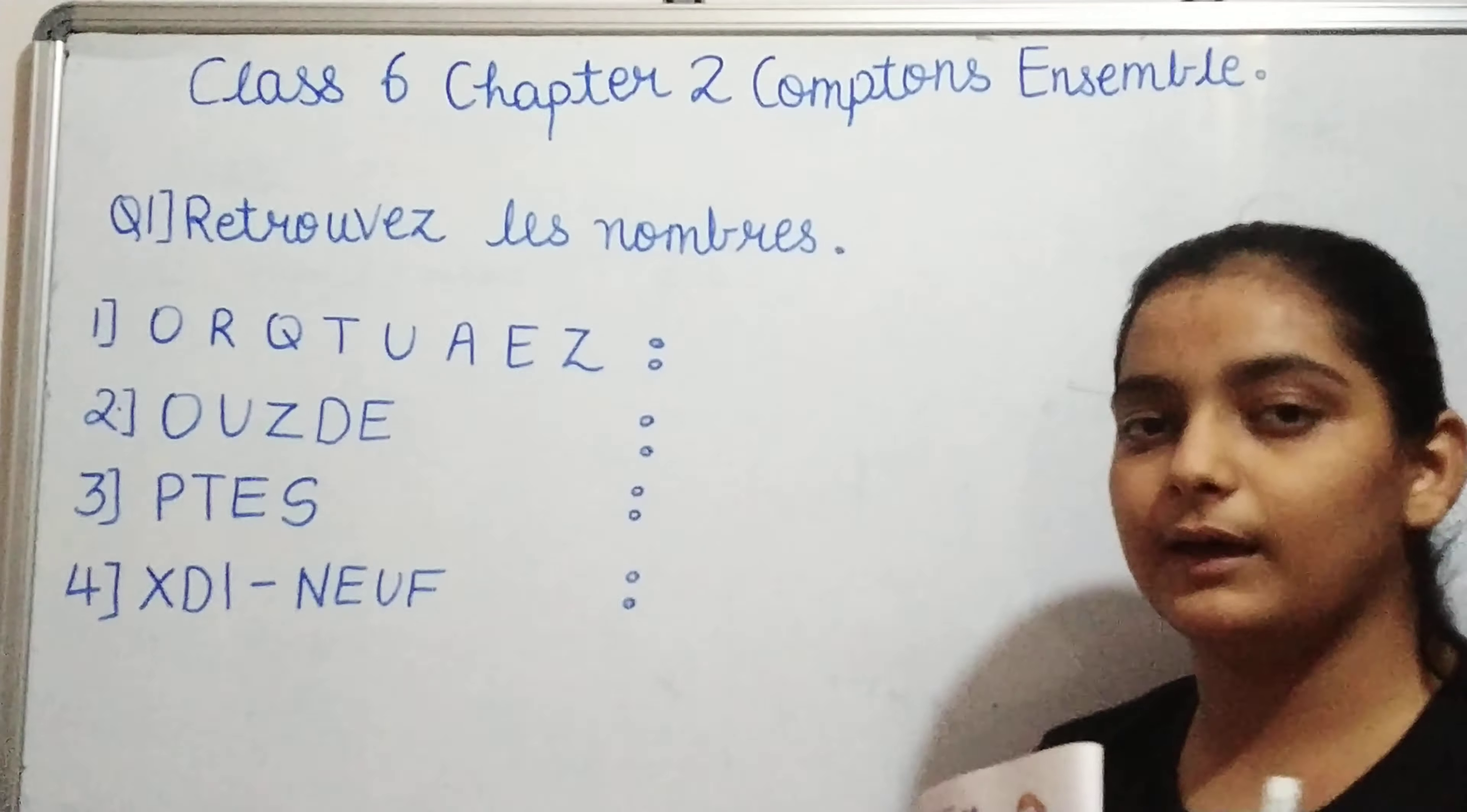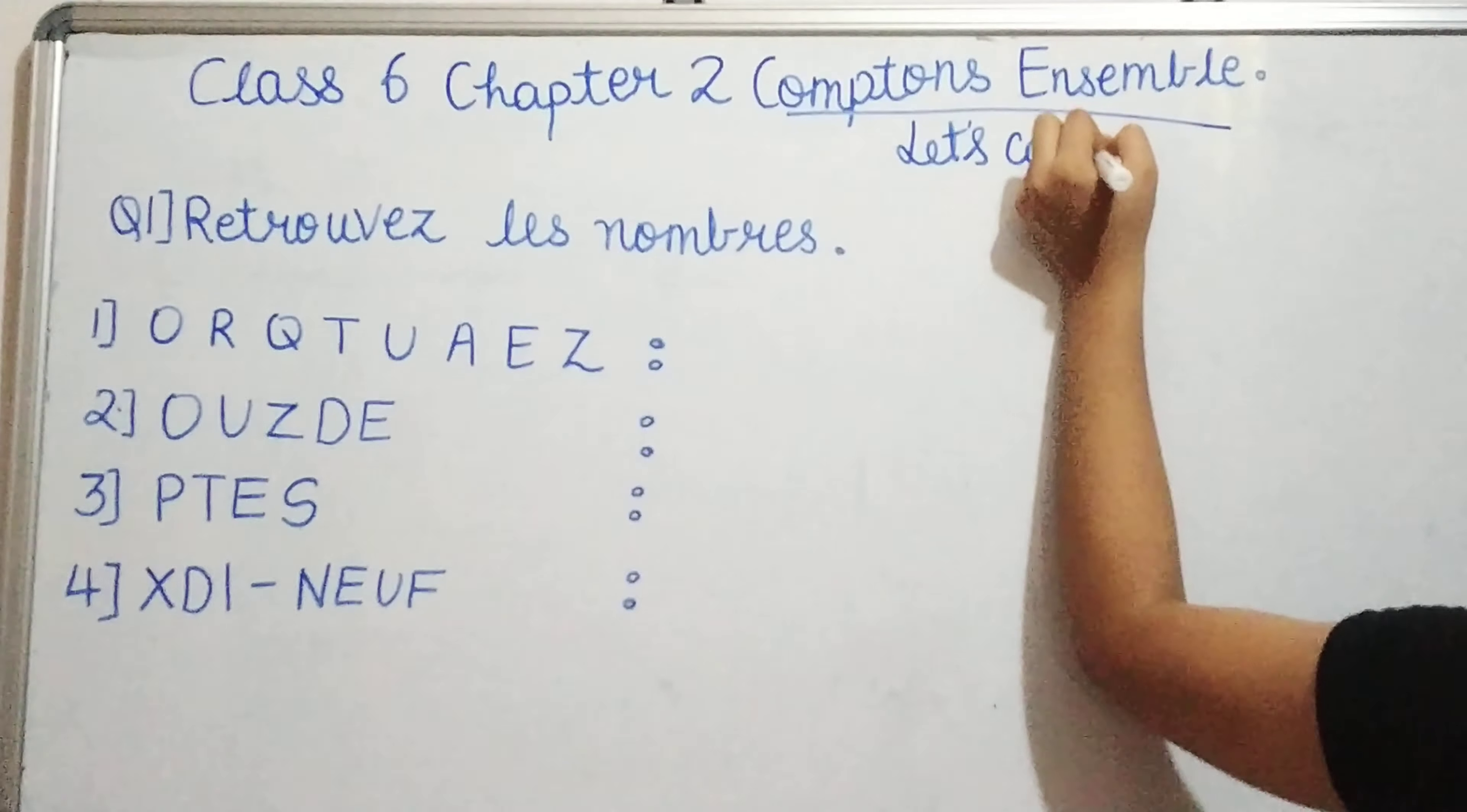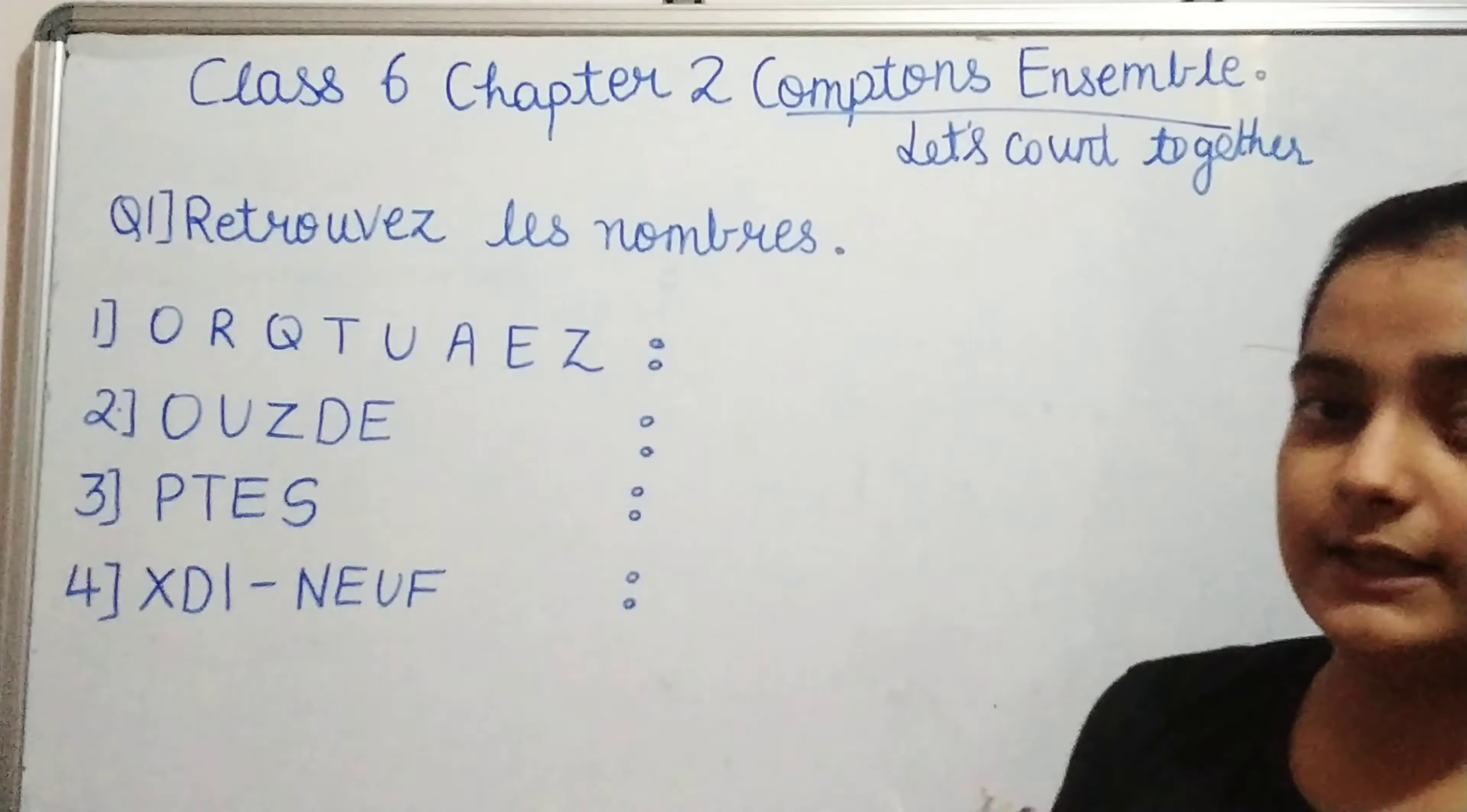Welcome back to my channel. My name is Bhumika and you are watching Learn French with Bhumika. So guys, in today's video, we are going to see Class 6 Chapter number 2, that is Comptons Ensemble. Now what does this mean? It means let's count together. This is again a workbook series, so in this we are going to solve the workbook. So let's begin.